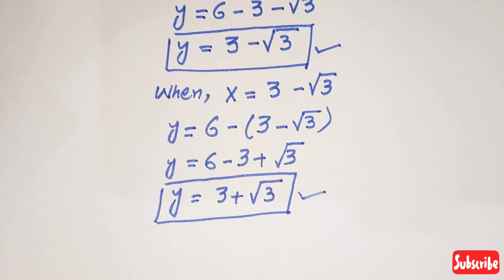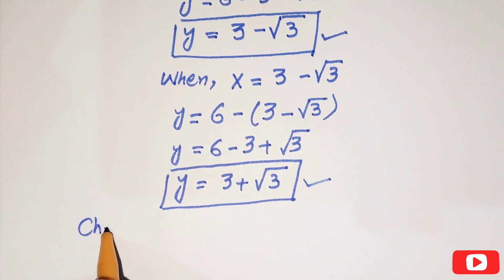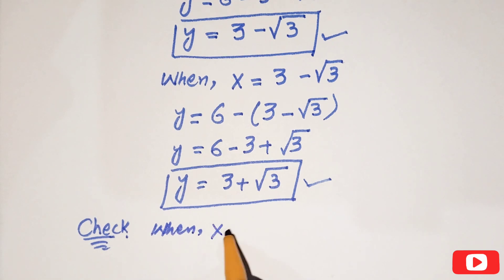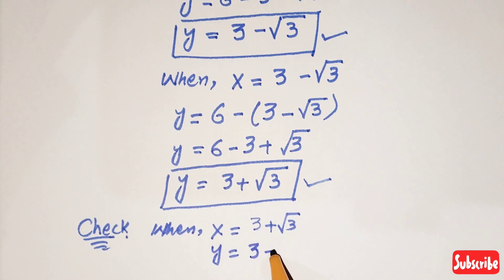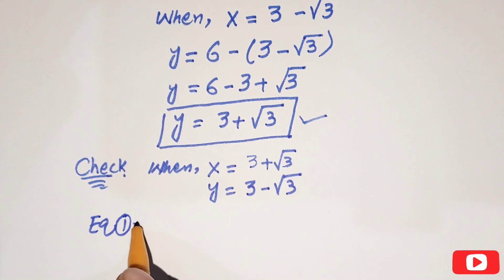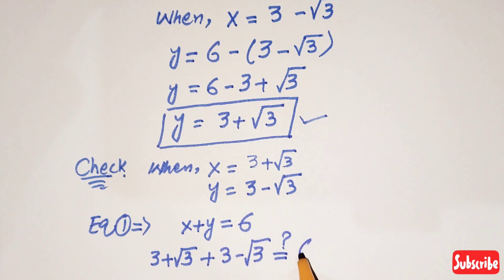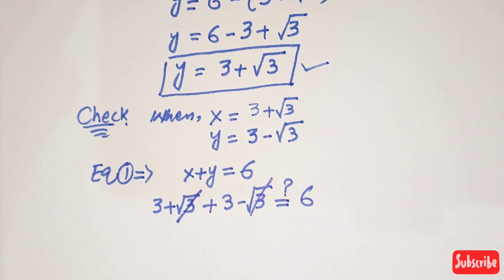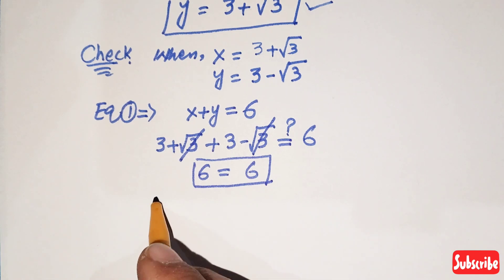We can verify our result by substituting the values back. When x equals 3 plus root 3 and y equals 3 minus root 3, putting into equation 1: (3 plus root 3) plus (3 minus root 3) equals 6. The root 3 terms cancel and 3 plus 3 equals 6, so left-hand side equals right-hand side. Our values are verified.